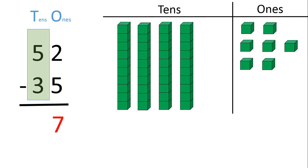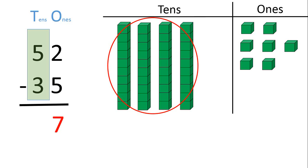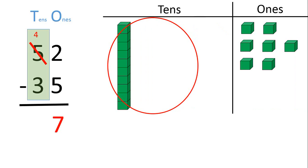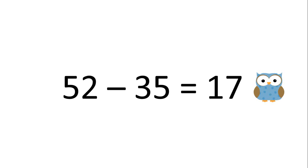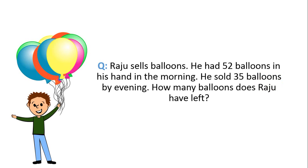Let's move to the tens place. Earlier we had 5 tens blocks, but we had moved 1 tens block to the ones place. So we are left with 4 tens blocks. Strike away 5 here and write down 4. Now we must subtract 3 from 4. So let's take away 3 tens blocks from the 4 tens blocks we have: 1, 2, 3. We are left with 1 tens block. 4 minus 3 equals 1. So write down 1 in the tens place. This gives us 17. So 52 minus 35 equals 17. The answer to our question is that Raju has 17 balloons left.